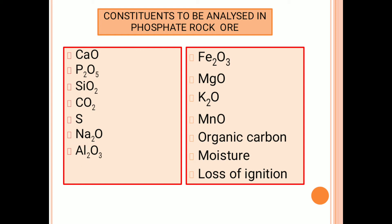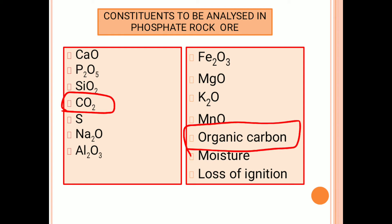Alumina determination is the same as iron ore, and ferric oxide determination — that is iron-3 determination — is the same as we discussed in iron ore. Magnesium oxide determination uses the magnesium pyrophosphate method, that is gravimetric analysis. Manganese oxide determination we also completed in manganese ore and iron ore. Moisture content determination and loss on ignition determination are also the same as iron ore determination.